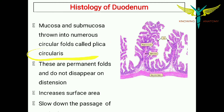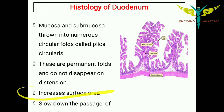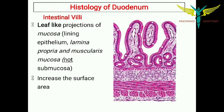The mucosa and the submucosa of the duodenum are thrown into numerous circular folds called plica circularis. These are permanent mucosal folds and do not disappear on distension. The function of these plica circularis is to increase the surface area of absorption and to help slow down the passage of food.